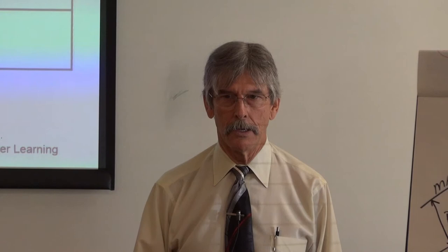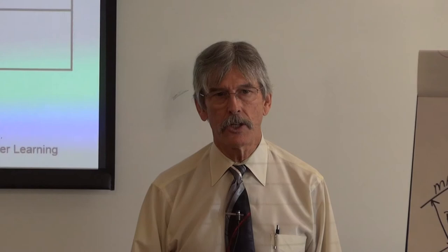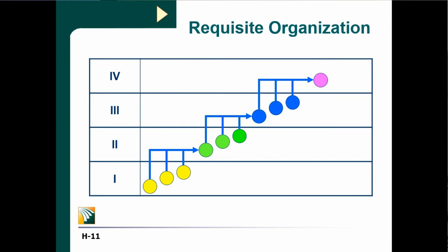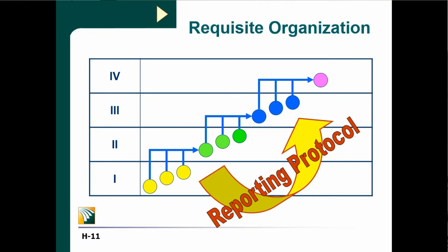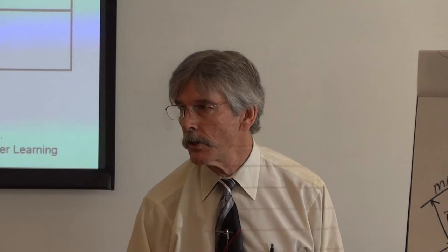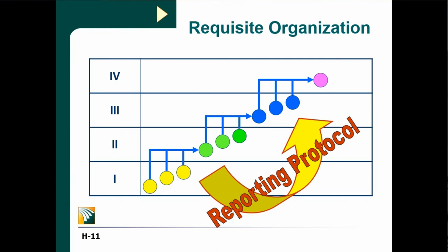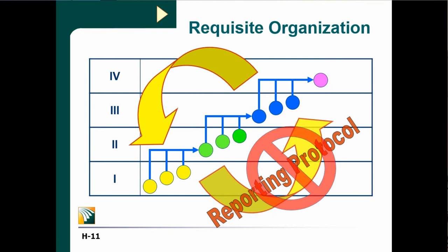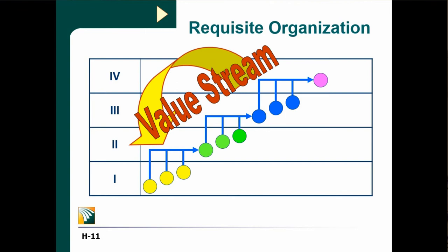Hierarchy is actually necessary to get productive work done. No tribe of anybody ever sent a man to the moon. We think hierarchy exists to create a reporting protocol — but the fact is we report to lots of people all over the organization. Randy, you've got a report you produce every month and depend on me for a number; you've got a project and depend on me for a segment of it. I report to people all over the organization. Hierarchy does not exist to create a reporting protocol. The reason hierarchy exists is to create a value stream where managers are bringing value to the problem solving and decision making of their team.